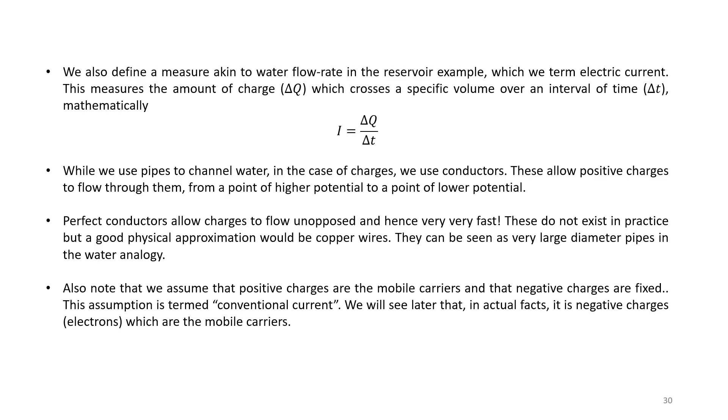So we define this measure which is very similar to flow rate in the reservoir example, and we are basically looking at the amount of charge delta Q which crosses a specific volume over a time interval delta T, and we define the electric current as delta Q over delta T.